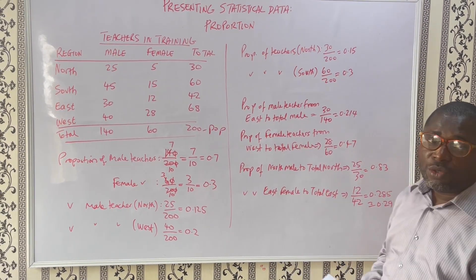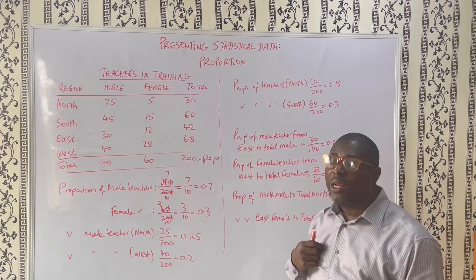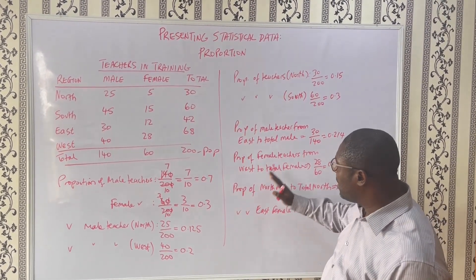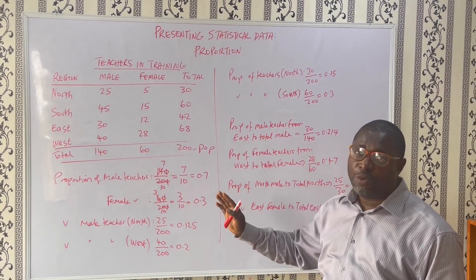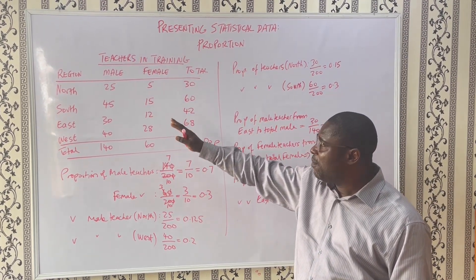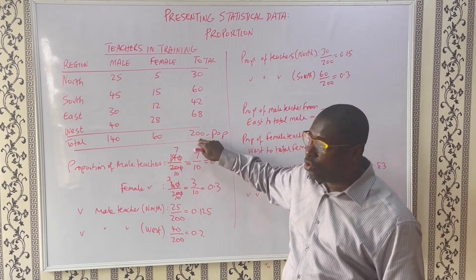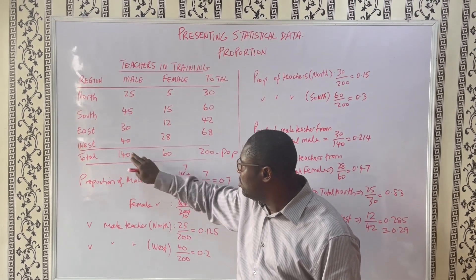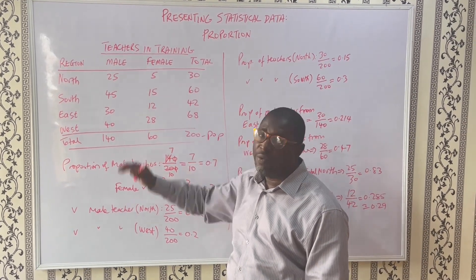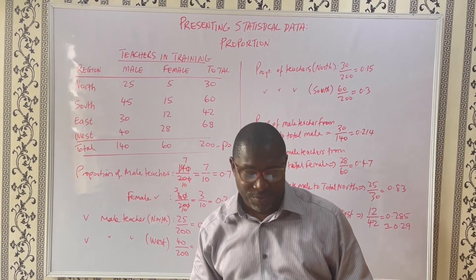I'd like you to watch this video again and try out every relationship from this table. From the examples I've given you, you can see that the relationship can be horizontal, it can be vertical, and as well as on the cross diagonal — looking from this end to the population total, from this end to the total, and then looking at each of them one way or the other. Thank you very much. I'll see you next time.